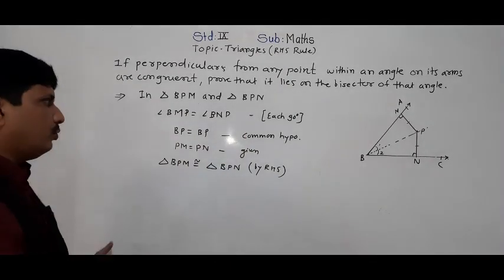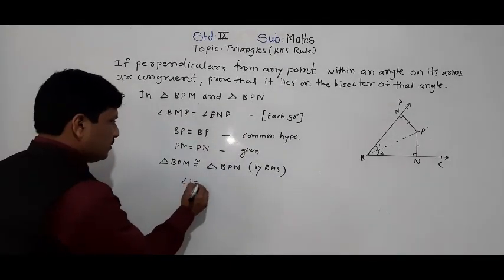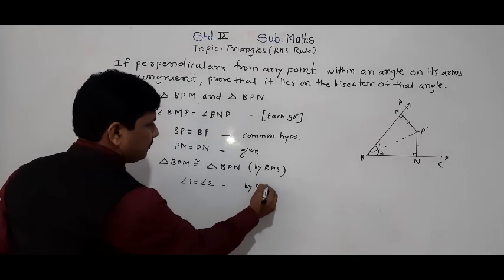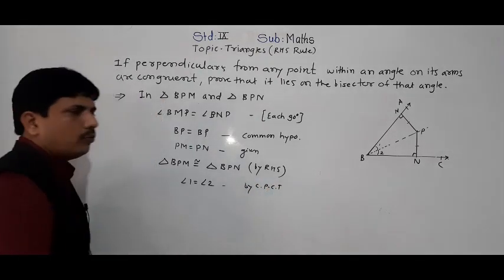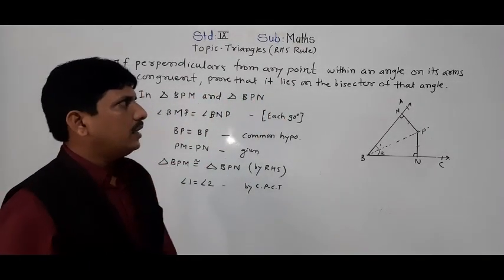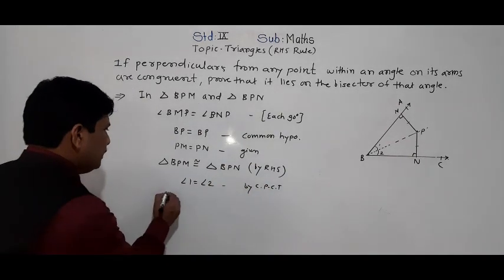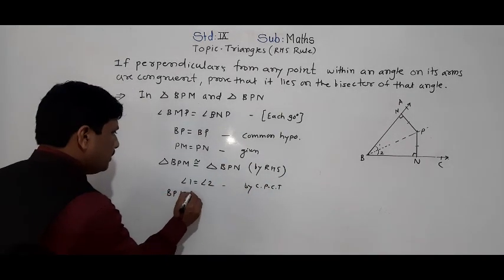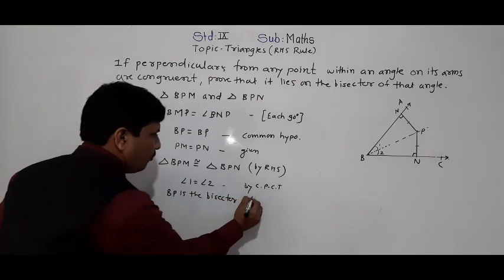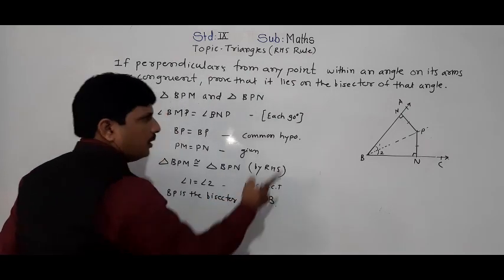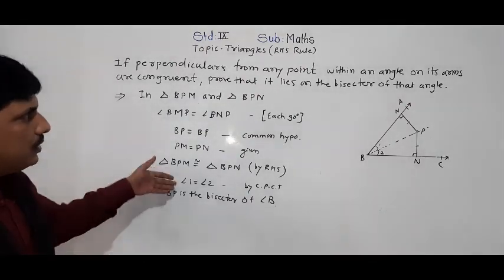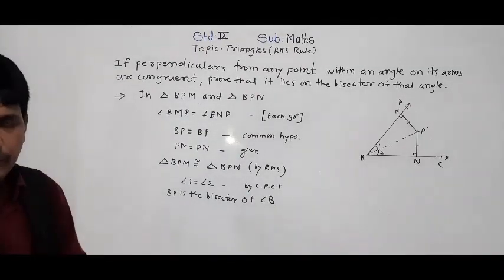Now the triangles are congruent, so we can say angle 1 is equal to angle 2 by CPCT — corresponding parts of congruent triangles. Therefore, BP is the bisector of angle B and point P lies on BP. This is the explanation of this question.